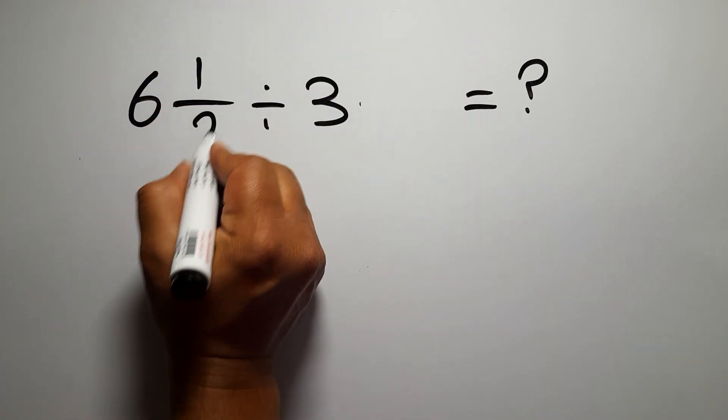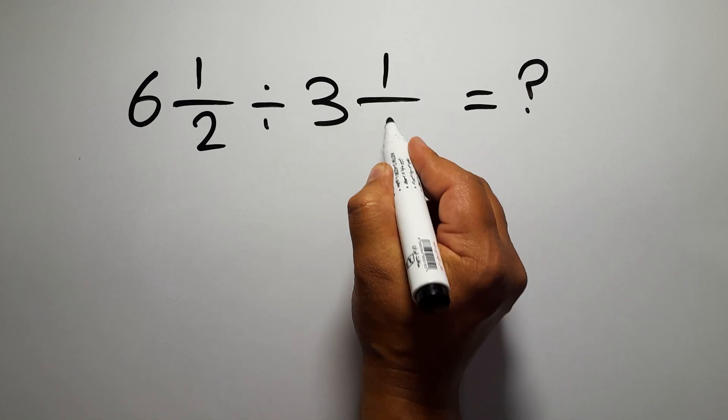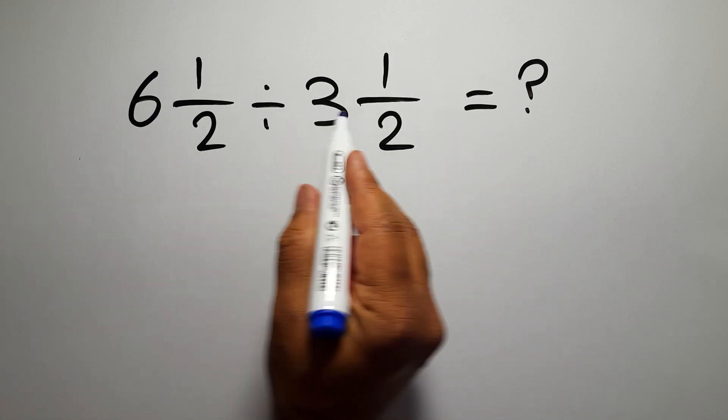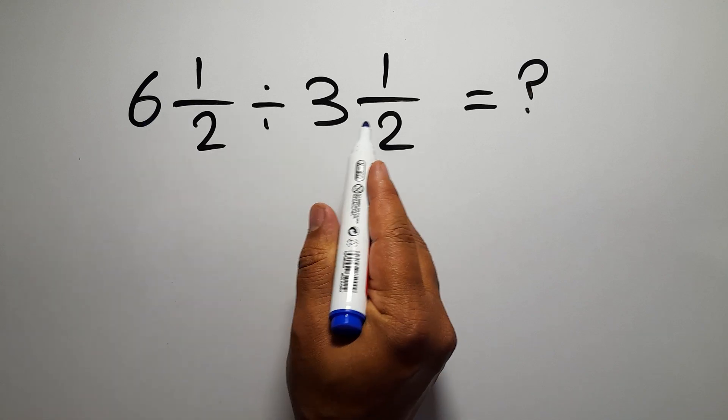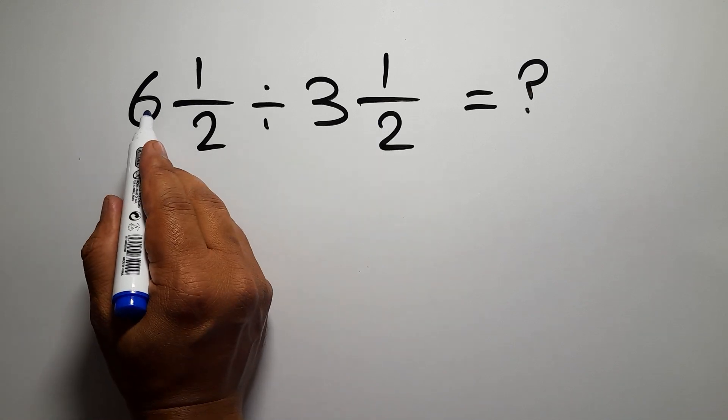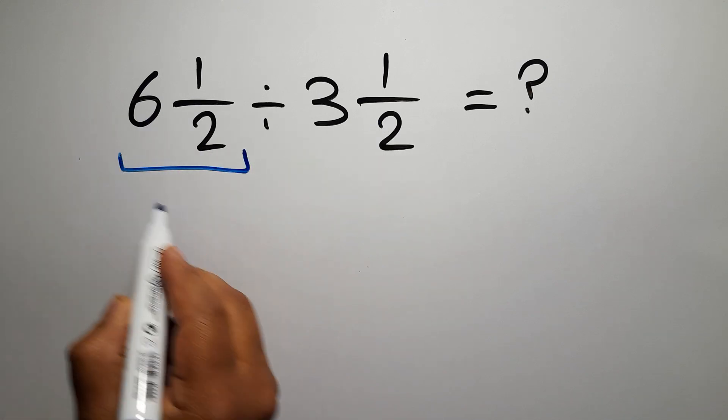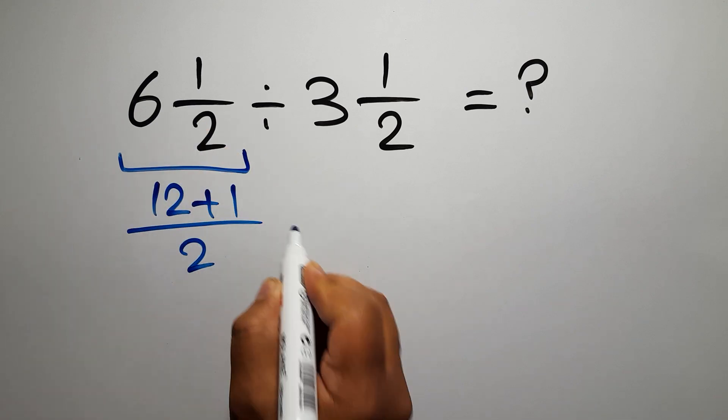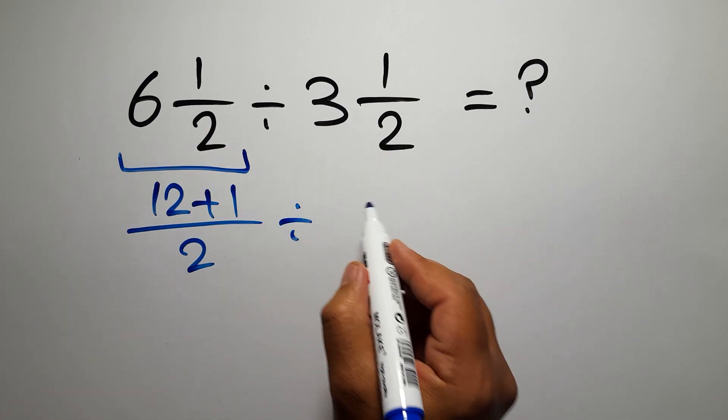6 and 1 half divided by 3 and 1 half. Okay, first let's convert these two mixed numbers to improper fractions. So 6 times 2 gives us 12, and 12 plus 1 over 2, divided by 3 times 2 gives us 6, and 6 plus 1 over 2.